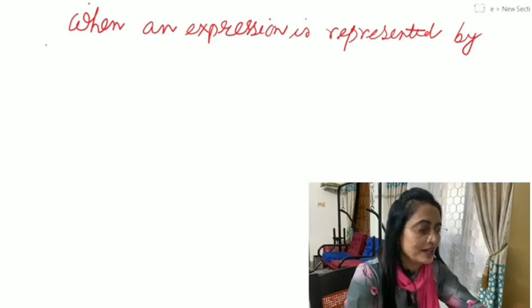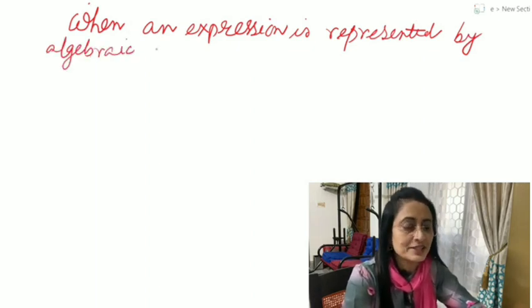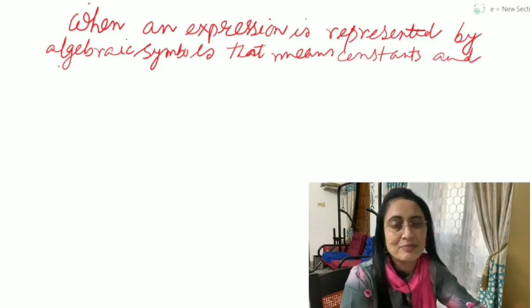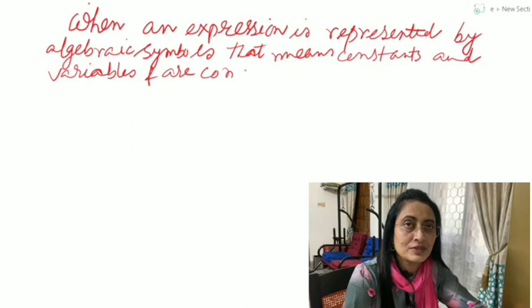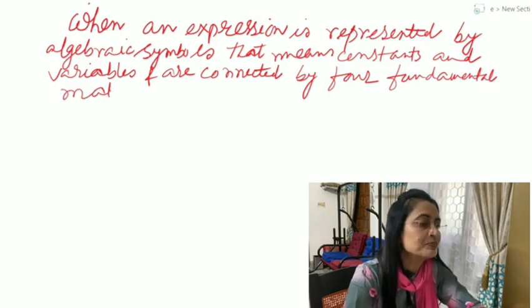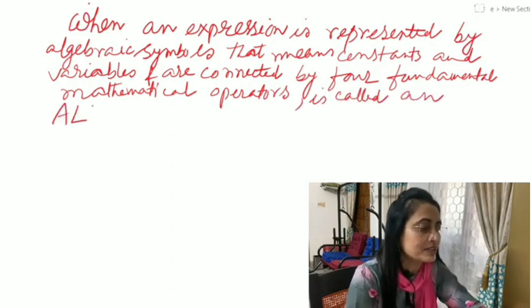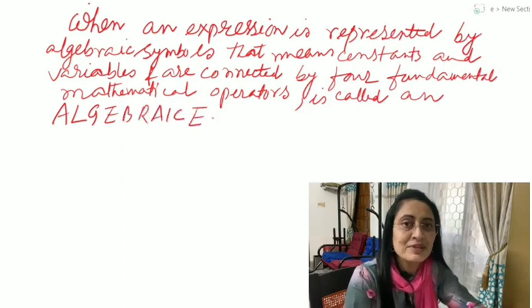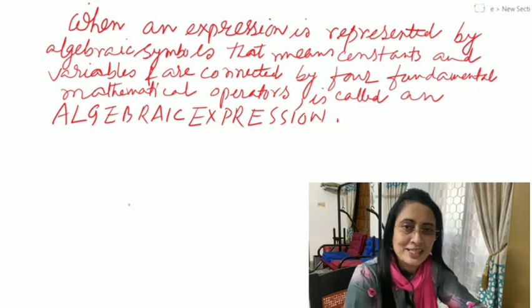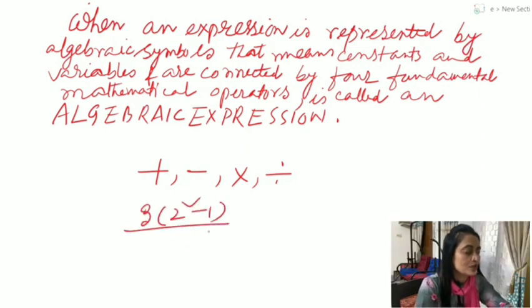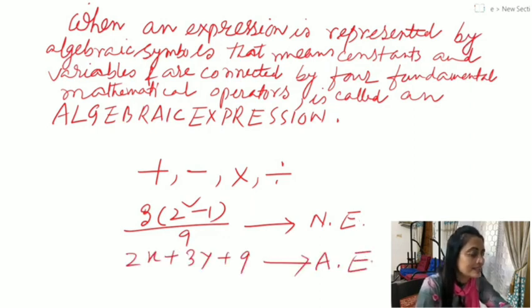Here is the definition of algebraic expression: When an expression is represented by algebraic symbols, that means constants and variables, and when these are connected by mathematical operators—plus, minus, division, multiplication—it is called an algebraic expression. This 3 into 2 square minus 1 by 9 is a numerical expression, and 2x plus 3y plus 9 is an algebraic expression.